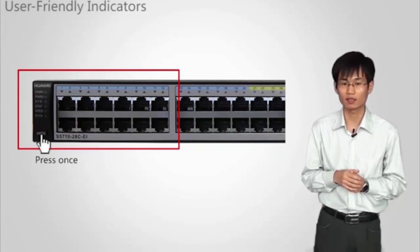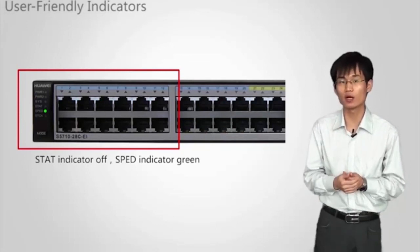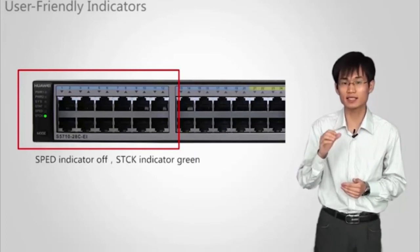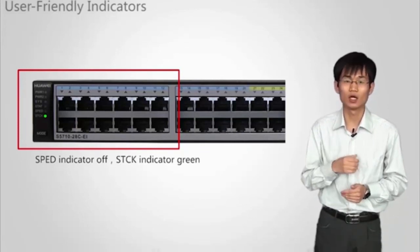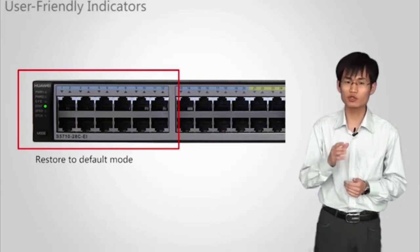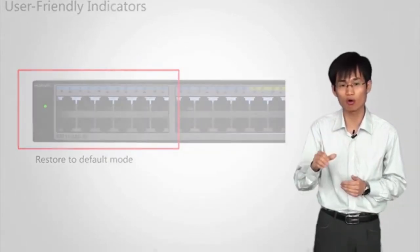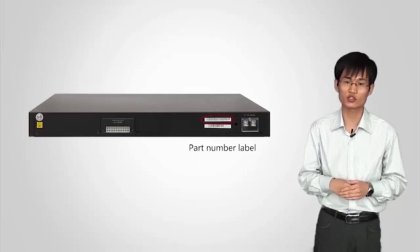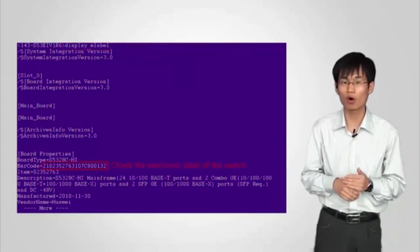When you press the switch button once, the SPEED indicator turns green, and the service interface indicators show the speed status of interfaces. When you press the button for a second time, the STACK indicator turns green, and the service interface indicators show the stack status. When you press the button for a third time, the STAT indicator turns green. If you do not press the mode switching button within 45 seconds, the mode indicator automatically restores to off. You can also run the display elabel command to check the electronic label of the switch.